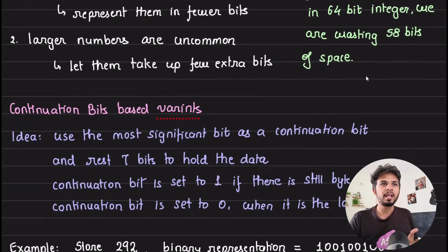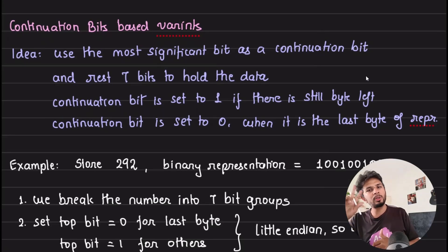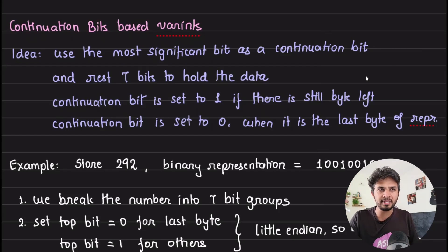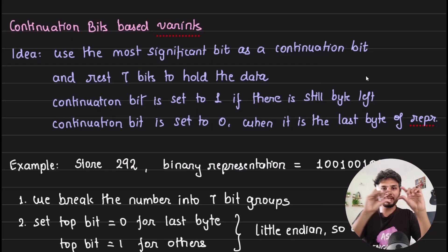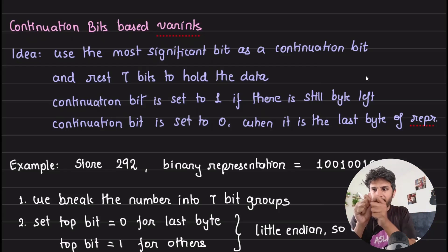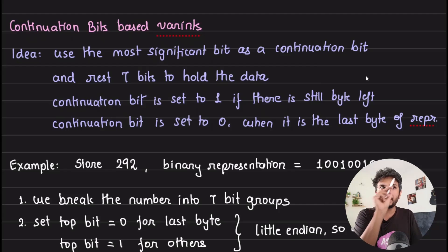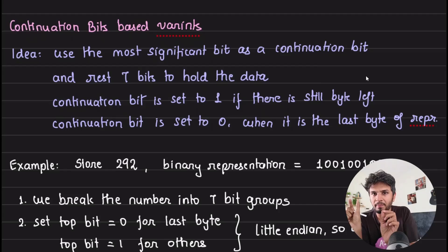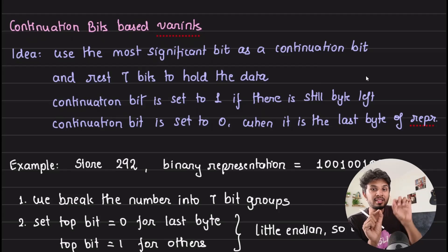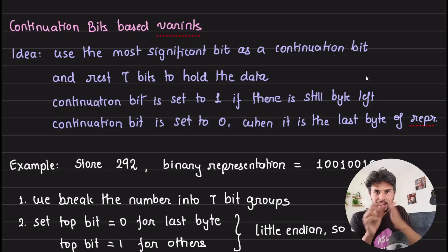Let's go slightly deeper into the implementation specifics. There are two approaches to build variable-length integers; I'll talk about the more common one — the continuation bit based approach. The idea is that we convert an integer into a byte array, and for each byte, the most significant bit is used as a continuation bit. We store 7 bits of data and 1 bit for continuation, repeating until the number ends, at which point the continuation bit is set to zero.